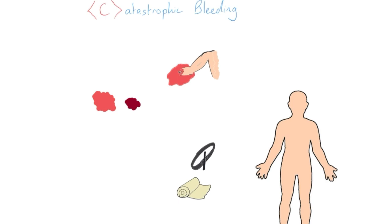It doesn't mean you can't have a venous catastrophic bleed - I've seen patients have quite dramatic venous bleeds, particularly when they're taking medication that thins their blood. But we're talking about lots and lots of blood, and traditionally especially in trauma it's bright red arterial blood following penetrating trauma that's damaged an artery, or by traumatic amputation following a traumatic injury.